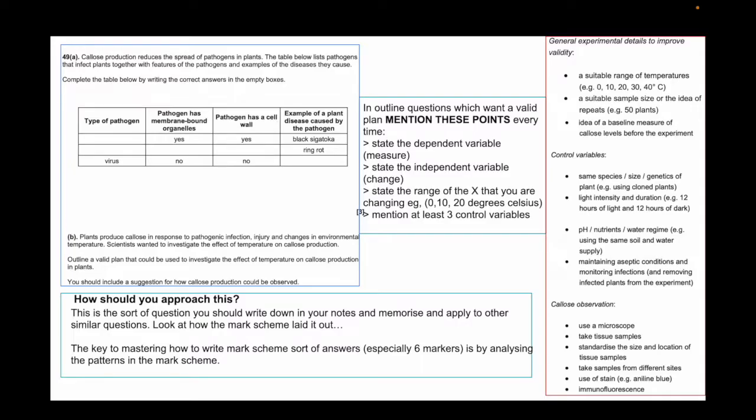It says a valid plan. A plan in science means you need an independent variable, a dependent variable, you need specifics, and most importantly you need control variables. I cannot stress to you how many marks are on the paper just by giving an example of a control variable or even just saying control variable. Ingrain that into your head. Control variables are top priority in six markers or whenever the question arises that you just talk about it.